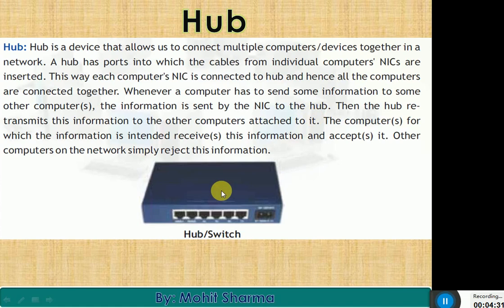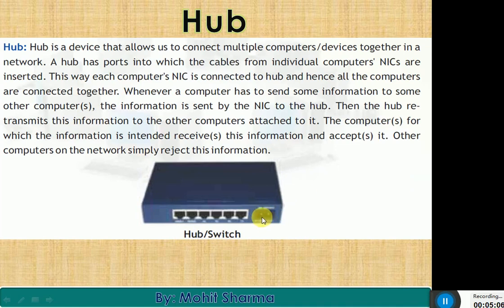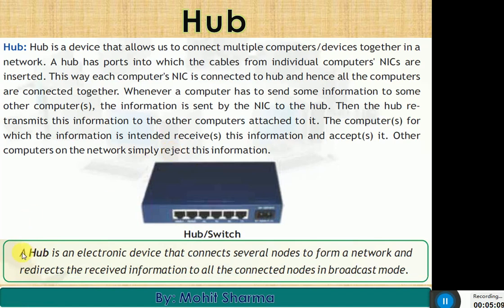Suppose we have four or five computers connected to the hub, and computer A wants to transmit some data to computer B. Computer A sends that data to the hub first, then the hub transmits that data to all the nodes connected to it. The computer for which the information is intended accepts it, while the rest of the computers reject it. Simply put, a hub is an electronic device that connects several nodes to form a network and redirects received information to all connected nodes in broadcast mode.